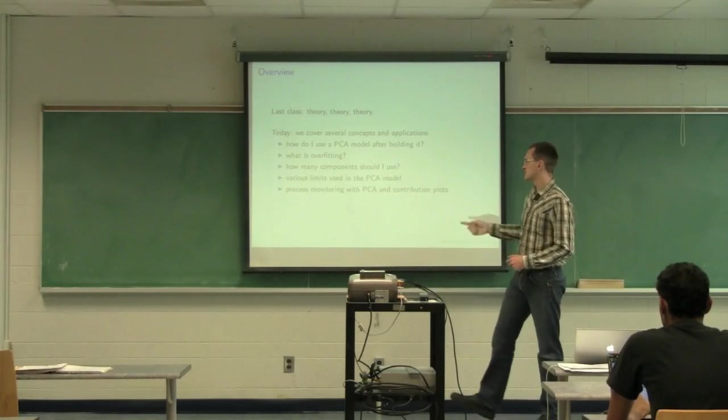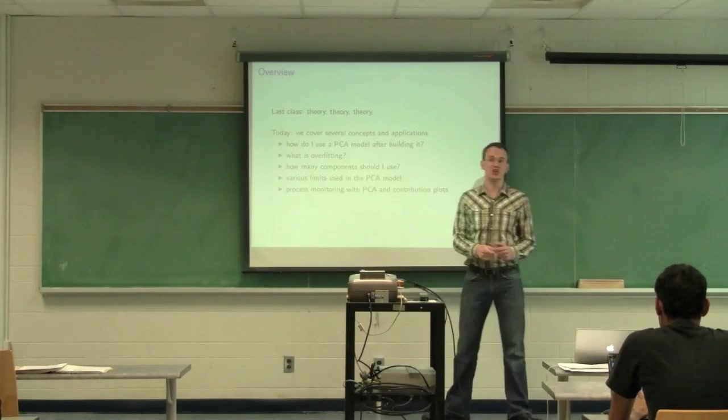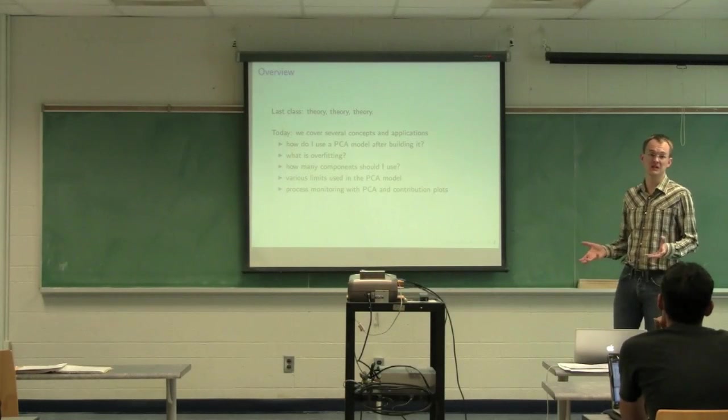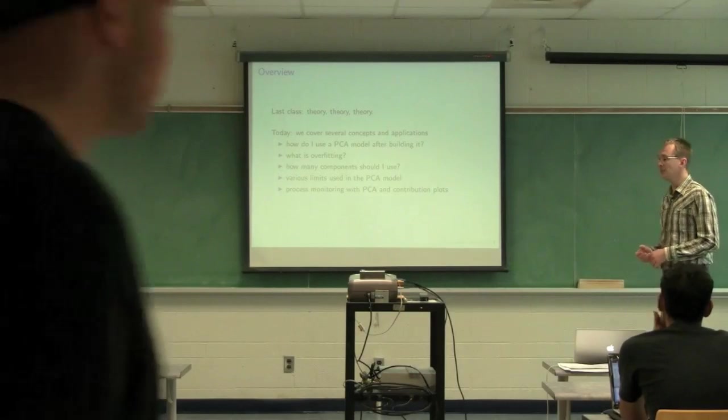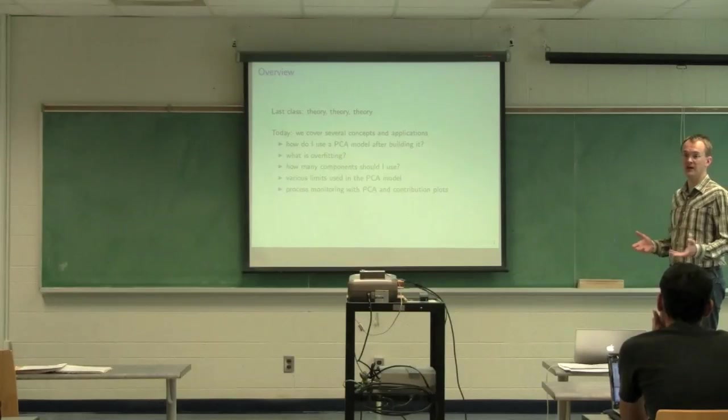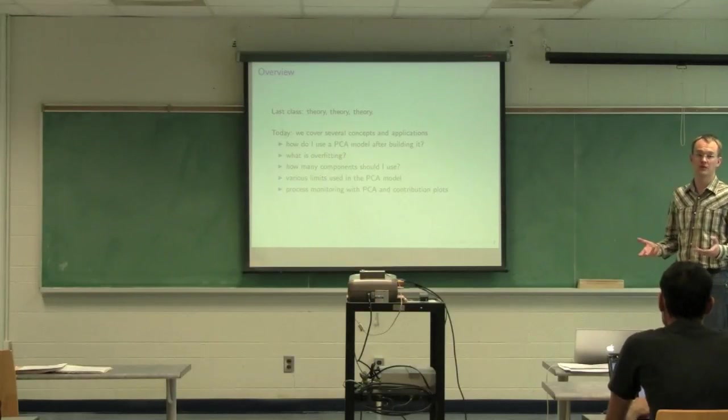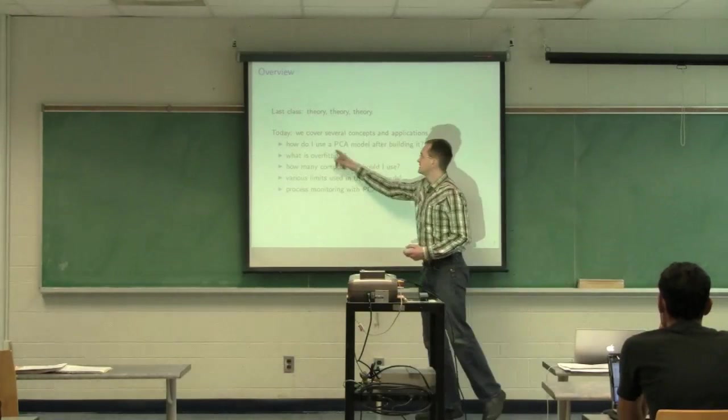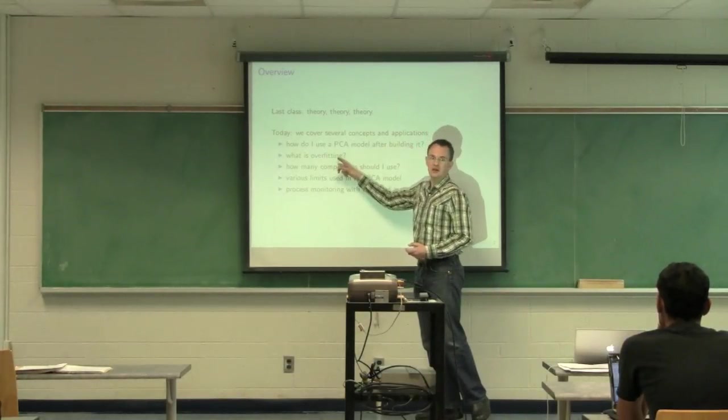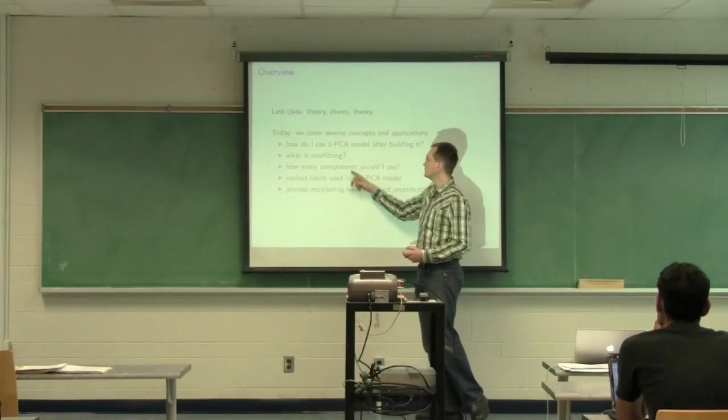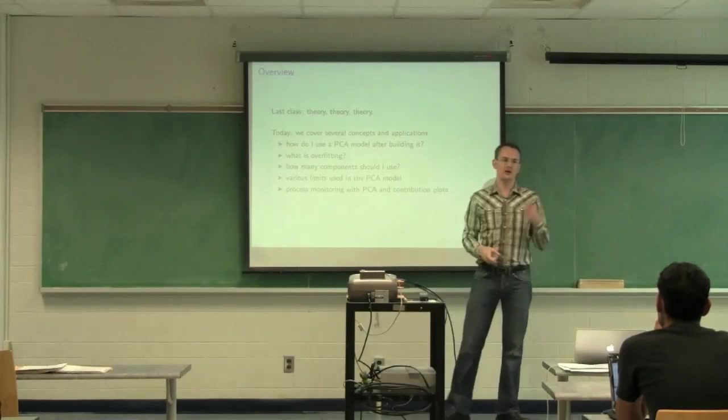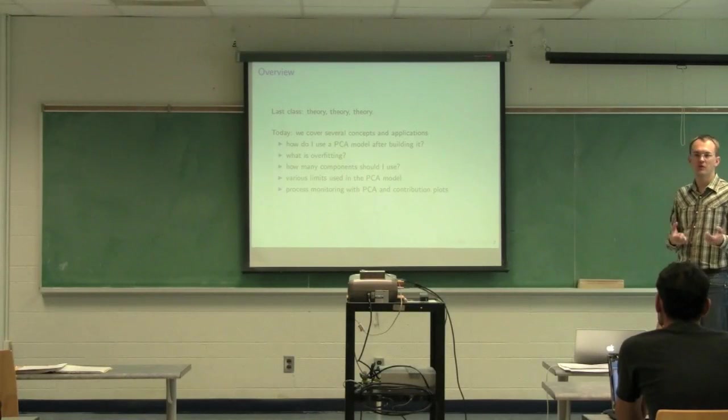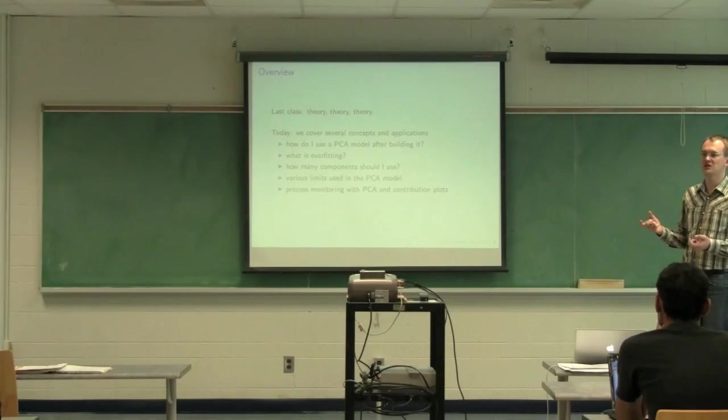But in order to get to this step here at the end, what we need to look at is this concept of overfitting. This is a general statistical concept. It doesn't just apply to multivariate models. We can overfit a least squares model, a neural network model, any sort of mathematical model. The reason why we need to understand what overfitting is and what it's doing is we want to ultimately answer this question that from the very first class people have been asking: how many components should we use?